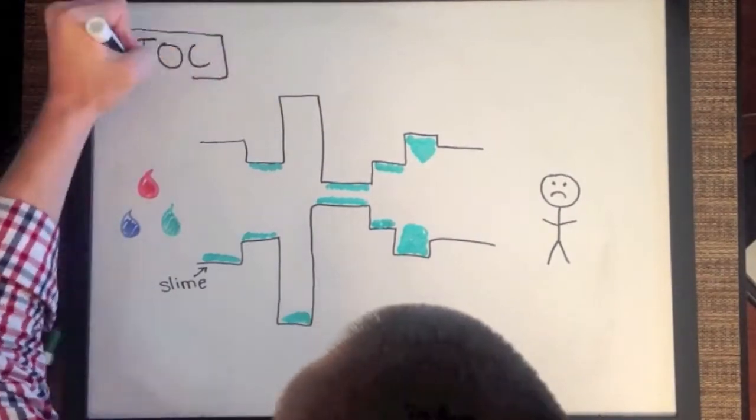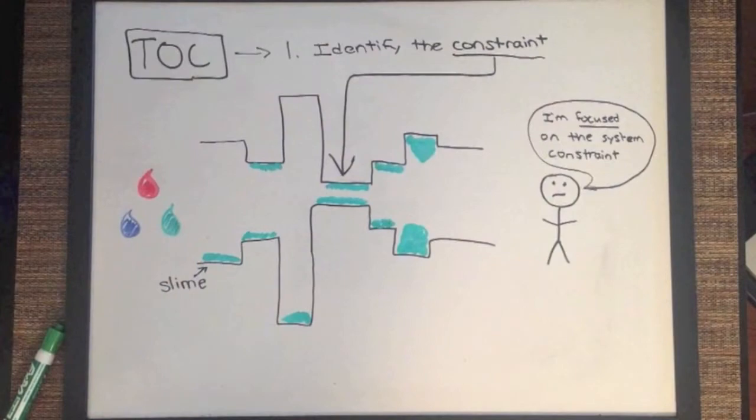First, you use TOC to identify the constraint. In this example, the constraint is the section of the pipe with the smallest radius. Now that you have identified the constraint, you now know where on the pipe to focus your continuous improvement efforts.